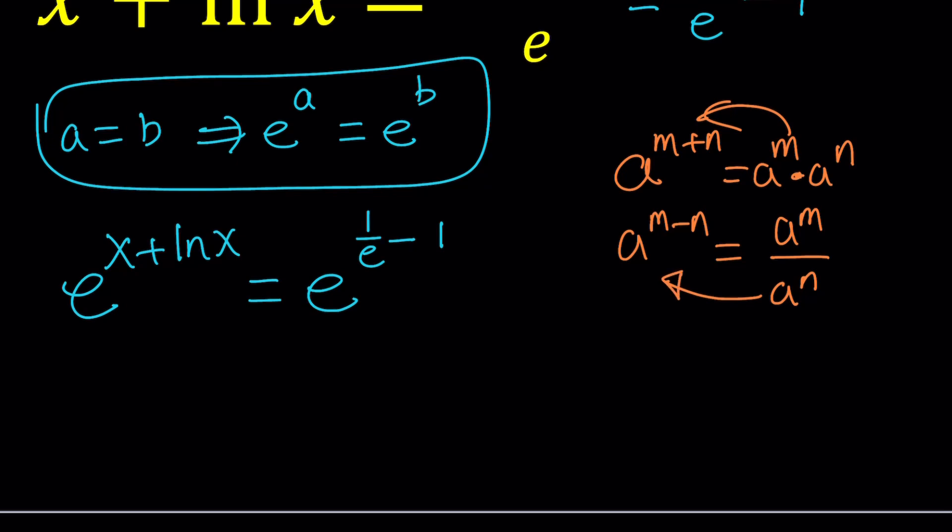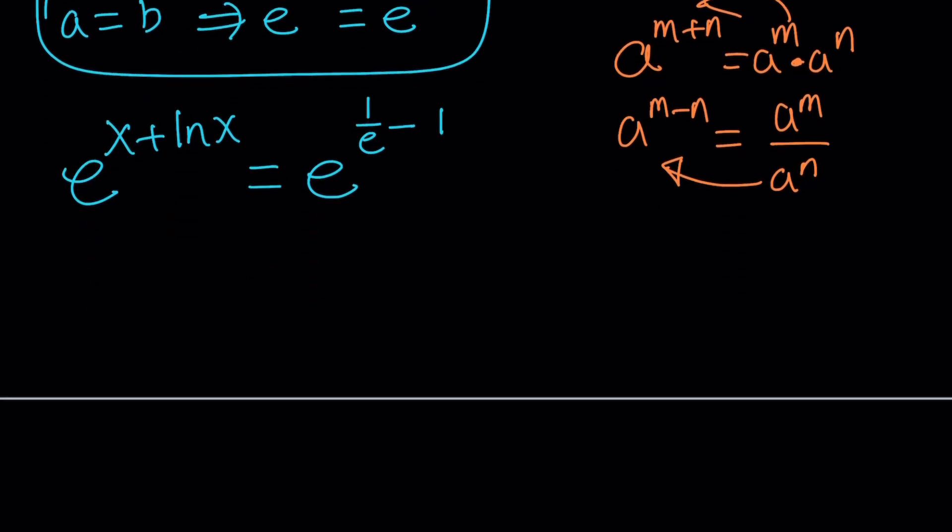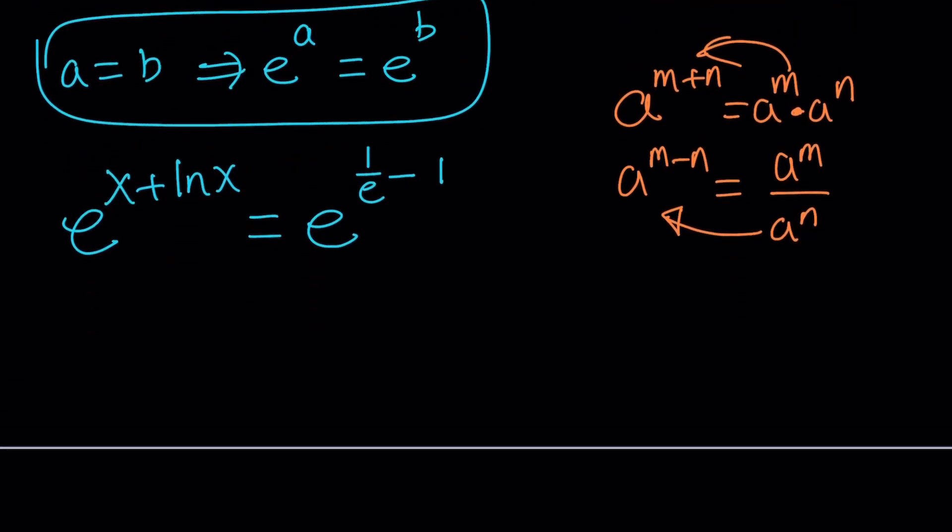And if you use these properties backwards, you probably know it backwards, forward and backwards. It means when you multiply two powers with the same base, you add the exponents. When you divide, you subtract the exponents. And we have both. So, let's go ahead and separate these. e to the x times e to the ln x equals e to the power (1 over e) divided by e to the power 1, which is e.